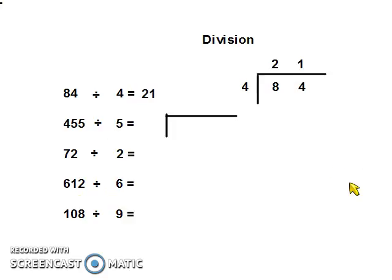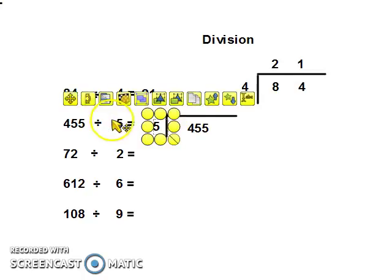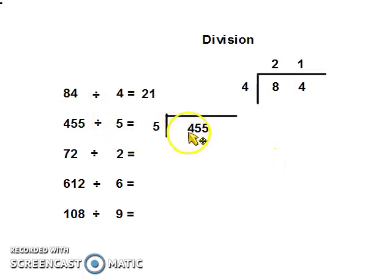It gets a little bit trickier when our first number of our sum doesn't go into the larger number that we're dividing it by. So once again, we put our larger number underneath, and we put out what we're dividing it by on the outside. Now, the 5 is larger than 4, so we can't actually put that into it.